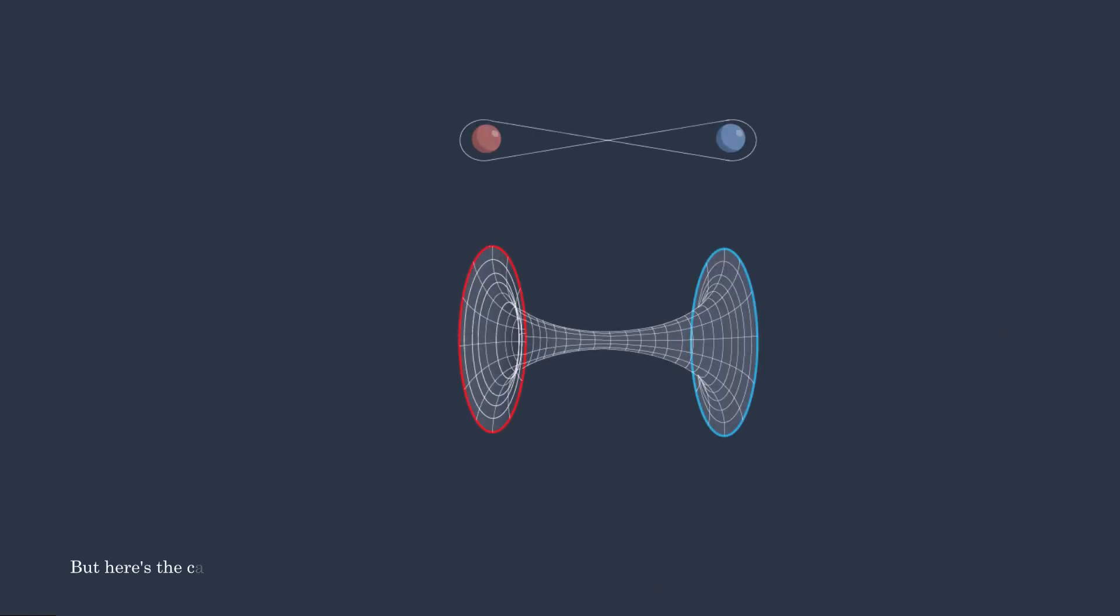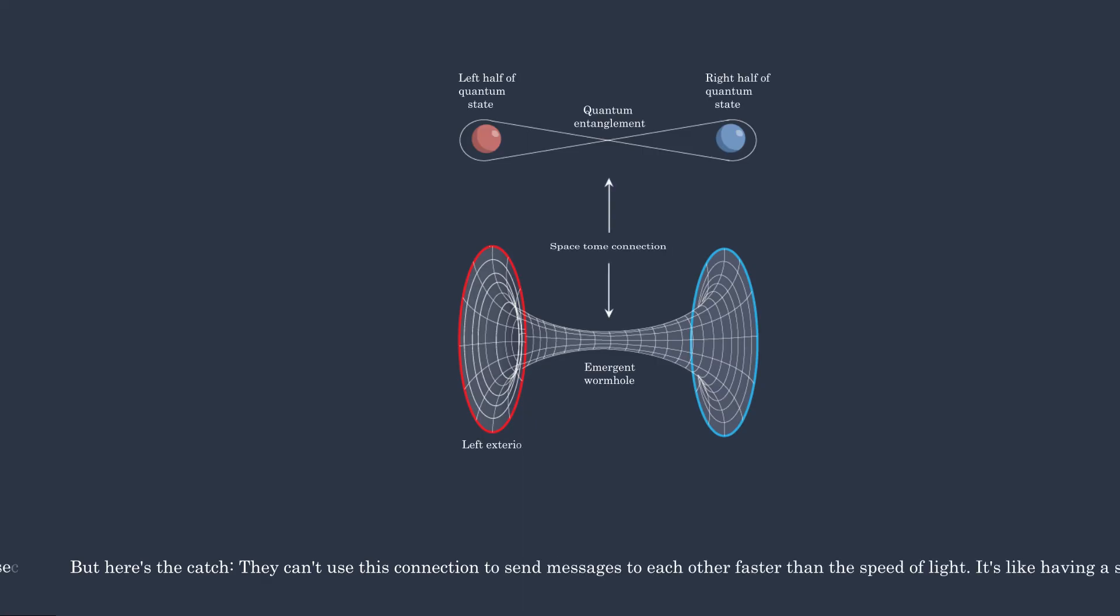But here's the catch. They can't use this connection to send messages to each other faster than the speed of light. It's like having a secret language that only they understand, but they can't use it to have a conversation because it's limited in how it can be used.